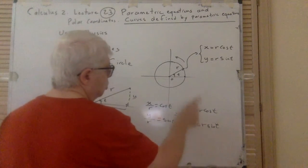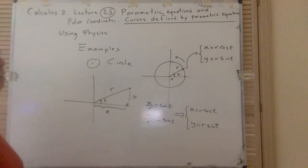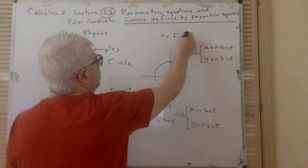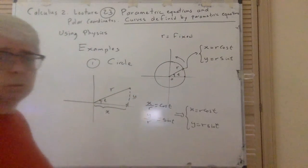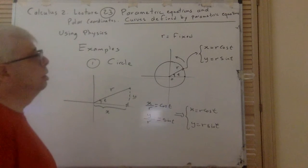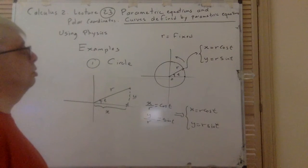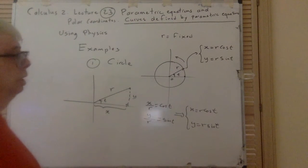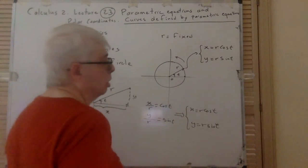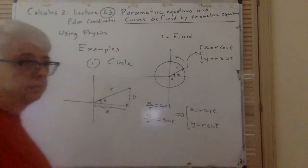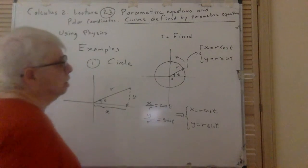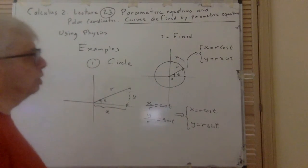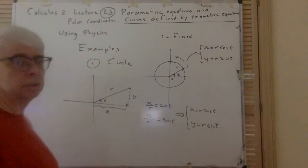R is fixed and doesn't change — though in polar coordinates r can change with time. Assuming r is fixed, if the particle moves according to x = r·cos(t) and y = r·sin(t), then it is moving on a circle with radius r centered at the origin. These parametric equations define the path of the particle.